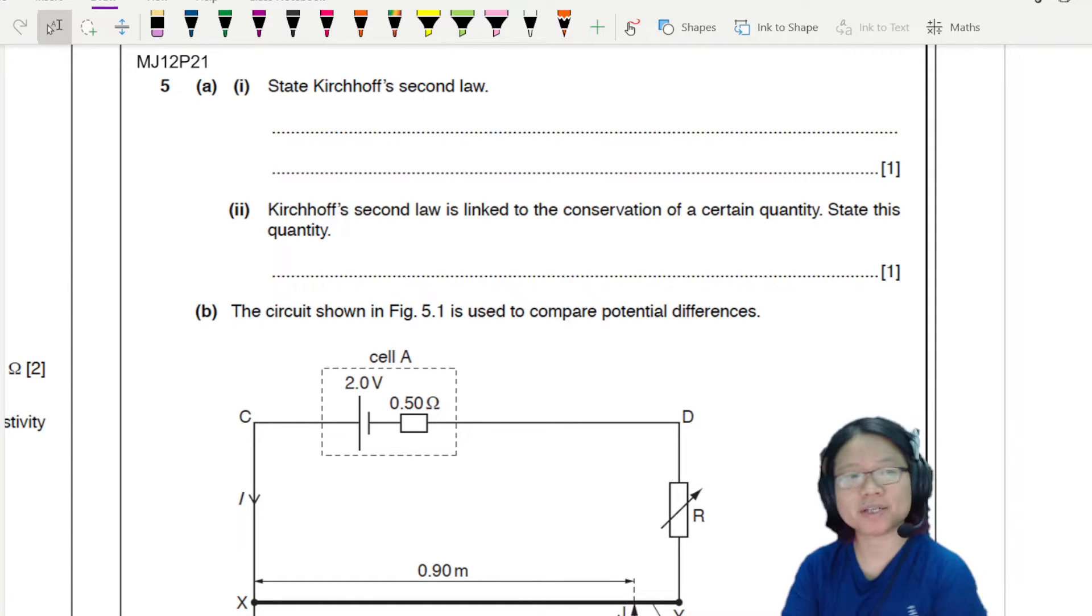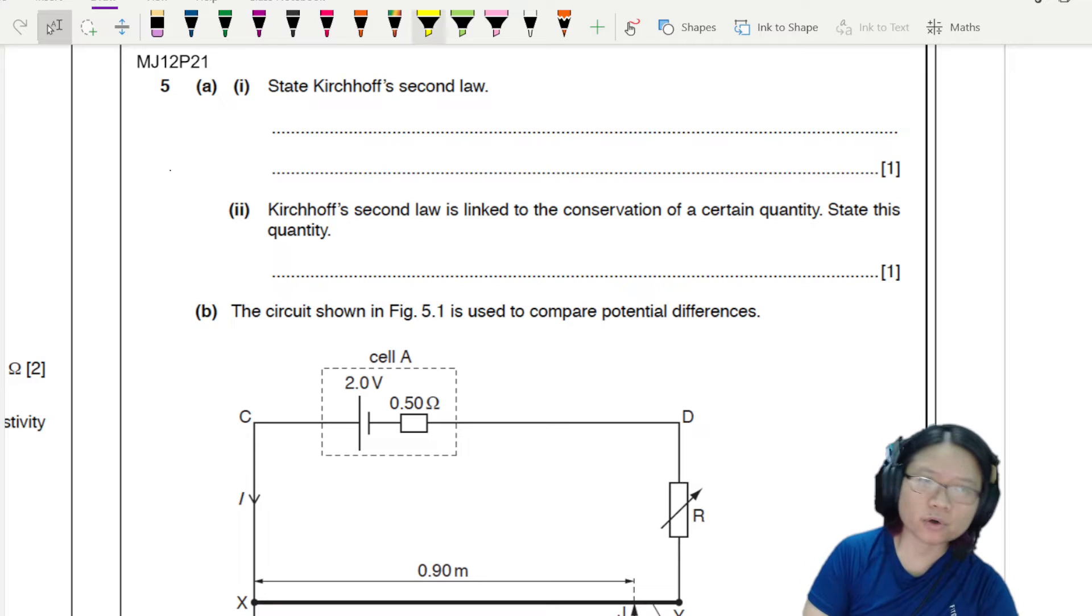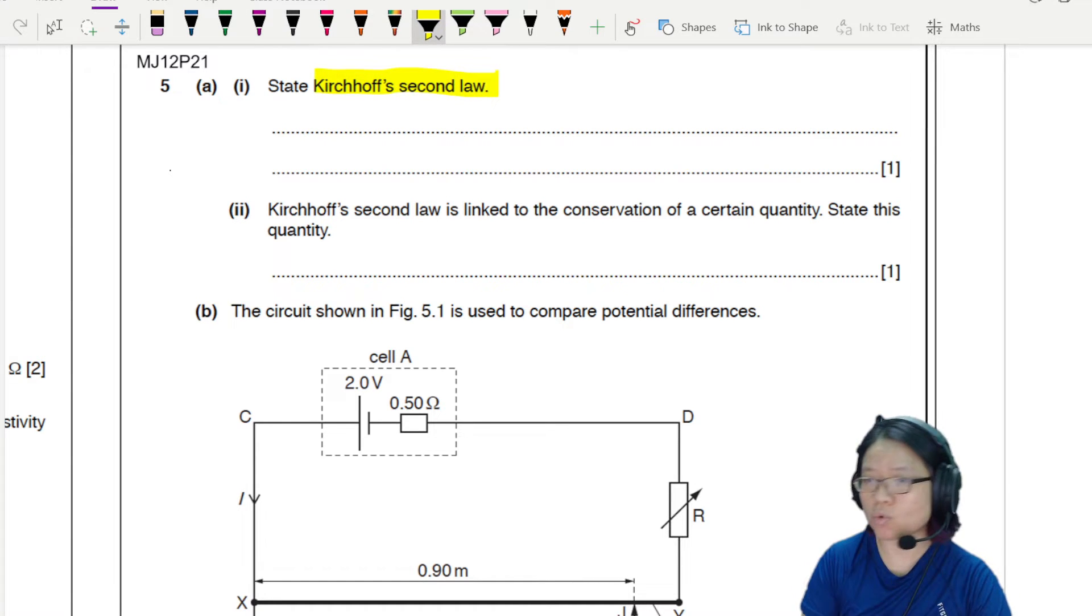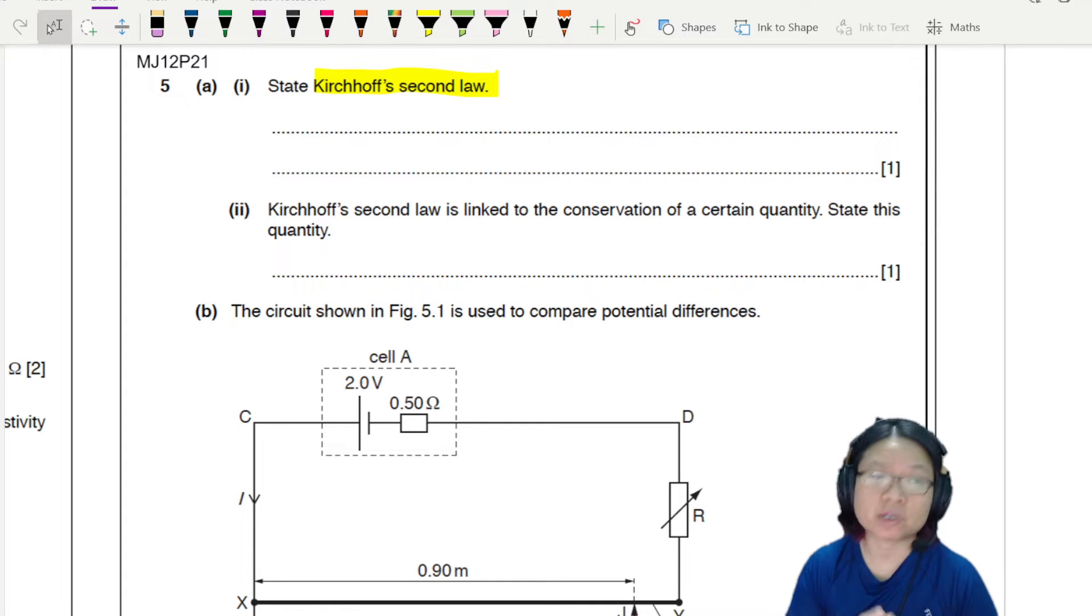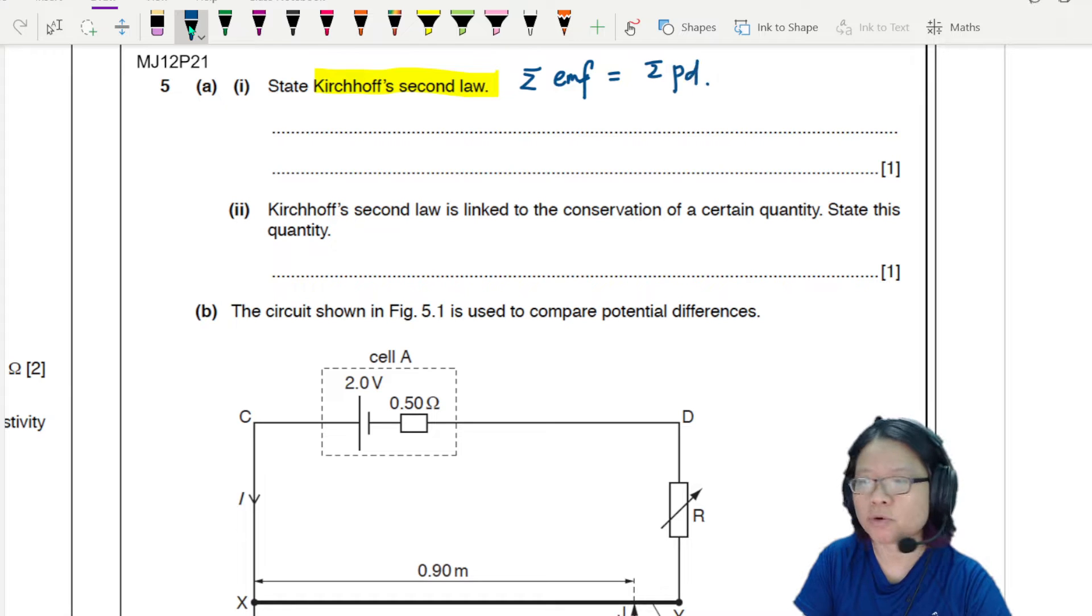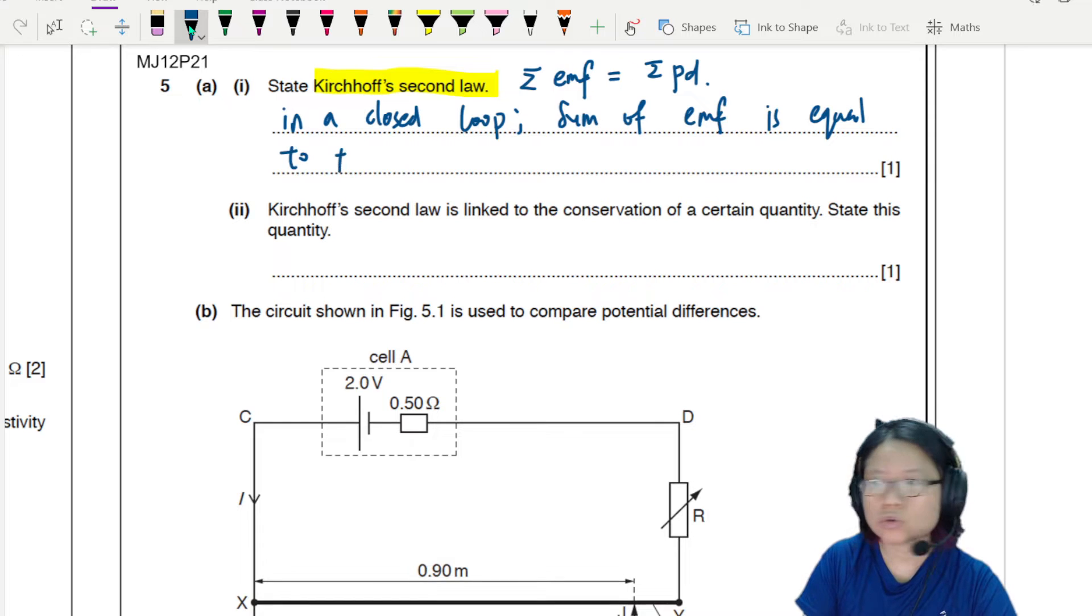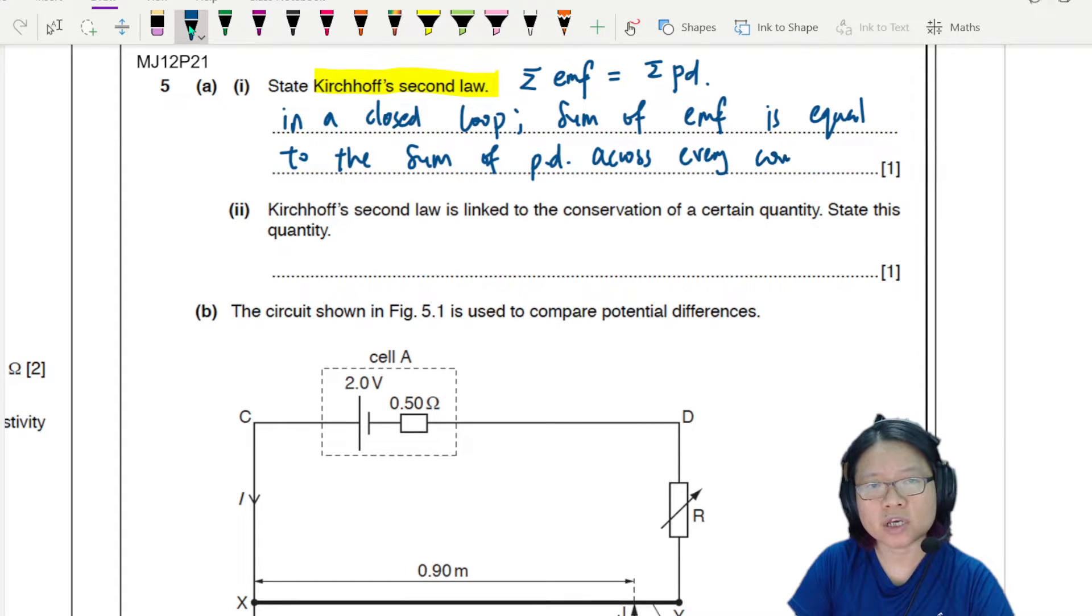Hello there. Here's a Paper 2 question regarding the potentiometer. But first, we have to define or state Kirchhoff's second law. So this is the law that regards itself with conservation of energy. I find it easier to think about the closed loop when we are looking at the sum of EMF is equal to sum of IR or potential difference. So I will say something along the line where in a closed loop, in a circuit, the sum of EMF is equal to the sum of potential difference across every component.